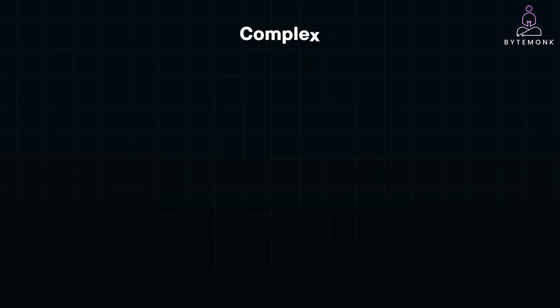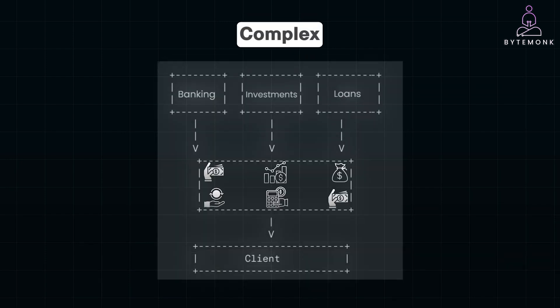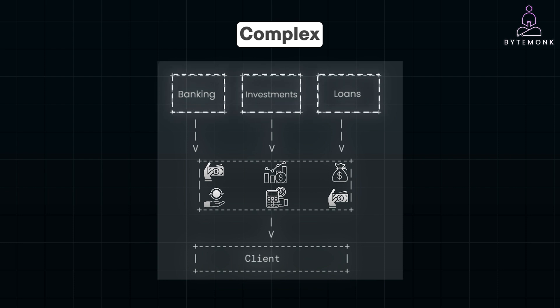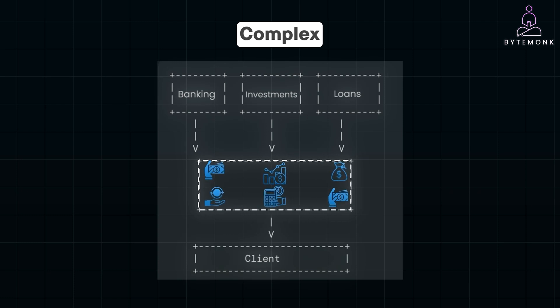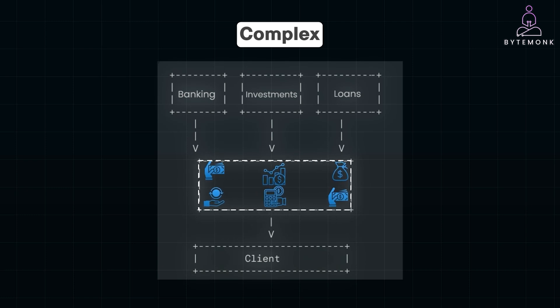On the other hand, a complex aggregator deals with more intricate scenarios involving multiple services with dependencies. Consider a personalized dashboard for a financial app. The aggregator service fetches data from banking, investments, loans, and credit score services. It can then process data to calculate net worth, analyze spending habits, and surface investment opportunities. This involves complex computations and conditional logic to deliver a tailored experience to the user.